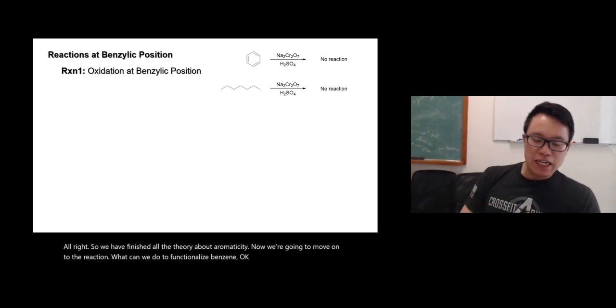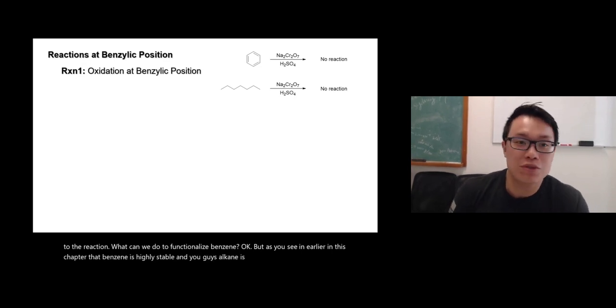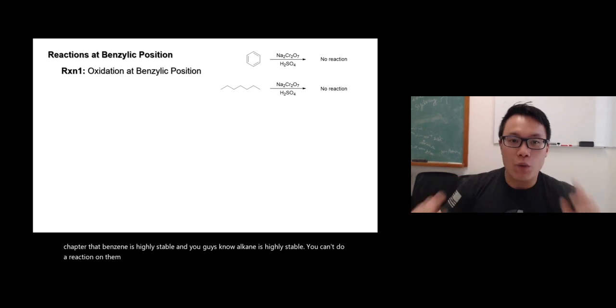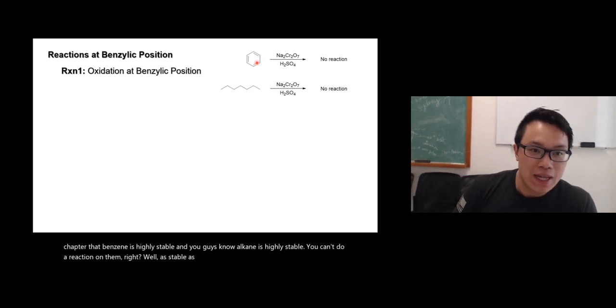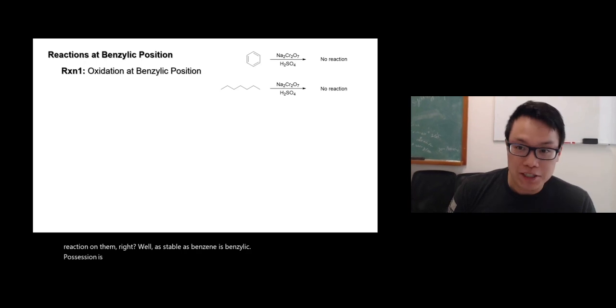As you've seen earlier in this chapter, benzene is highly stable. You guys know alkane is highly stable - you can't do a reaction on them. Well, as stable as benzene, its benzylic position is susceptible to some reaction.